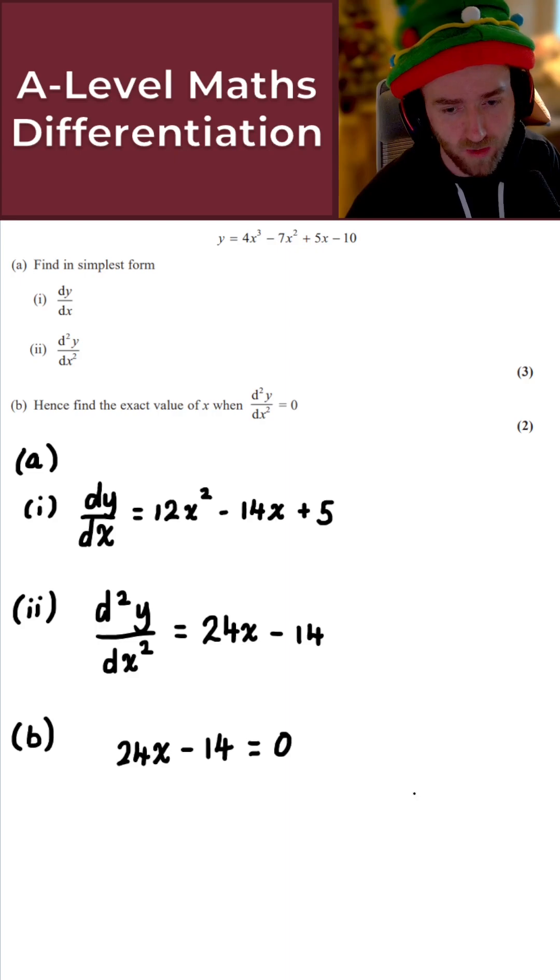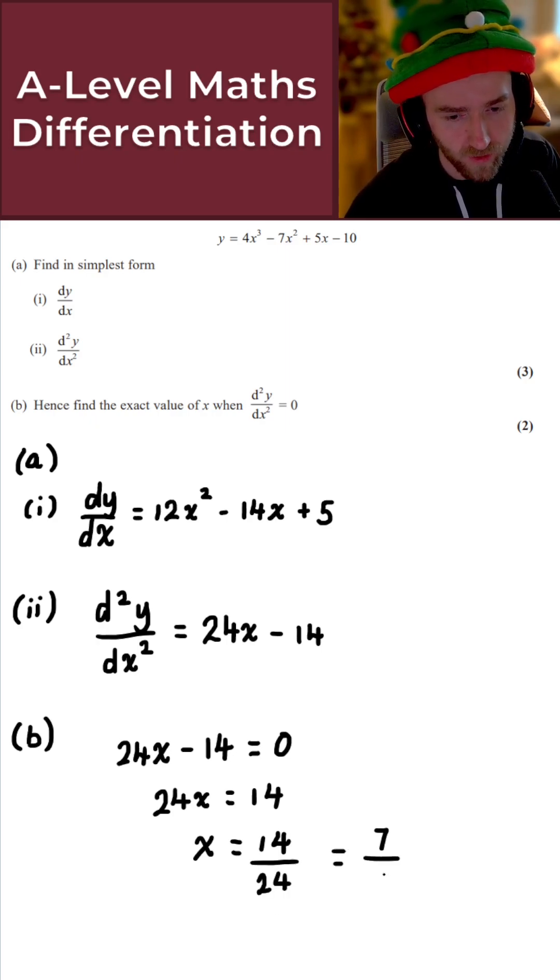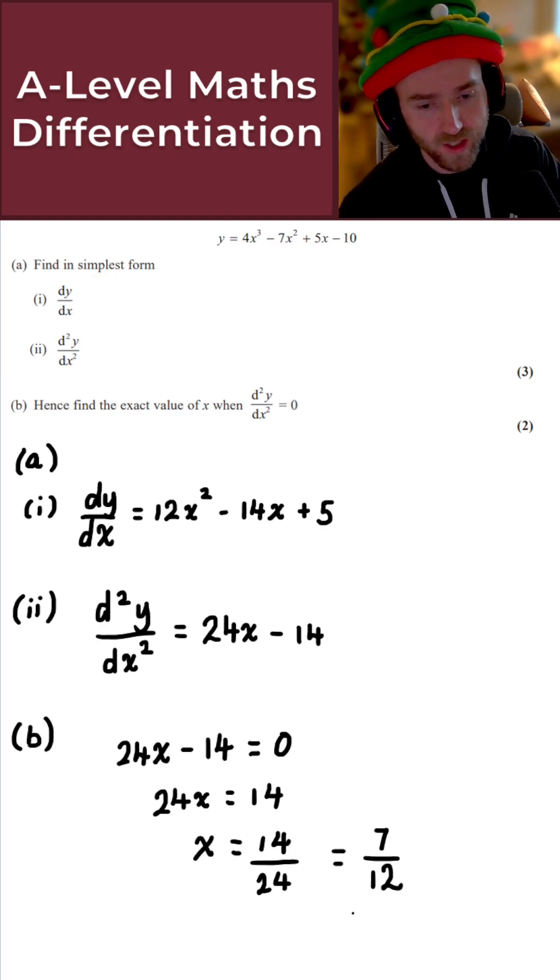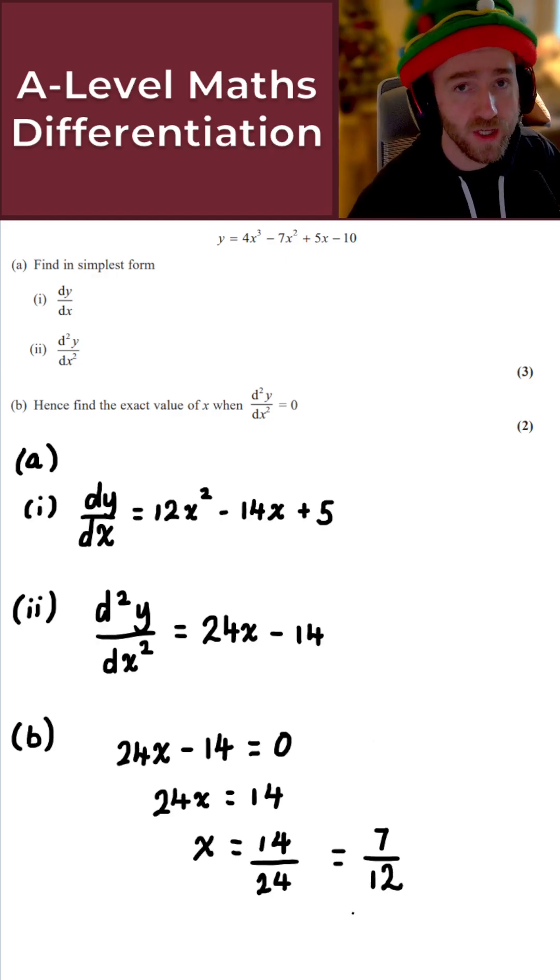We shouldn't really be struggling with this. I would expect my GCSE students to be able to solve this, so add 14 to both sides. So 24x equals 14, and in that case, I get x is 14 over 24. I can just simplify here, that is 7 over 12. So that gives the solution to today's question. Thank you.